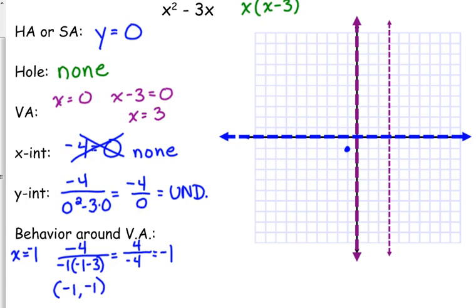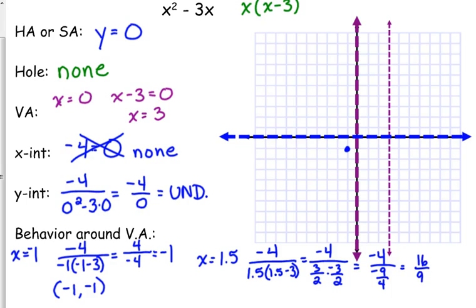Let's pick a number there in the middle. What's a good number between 0 and 3? 1 and a half. Let's see what happens when we plug in 1 and a half. Negative 4 over 1.5 times 1.5 minus 3. It might not be so pretty, but that's okay. Let's see here. 1.5 minus 3 is negative 1.5. I'm going to turn those into fractions, because that's easier to deal with. So, that's negative 9 over 4, which is if I flip and multiply 16 over 9. 16 over 9, that's a little bit less than 2. So, I've got a point right there.